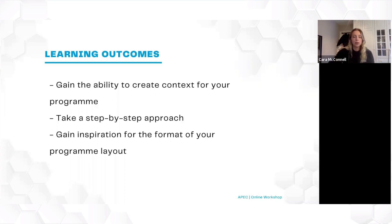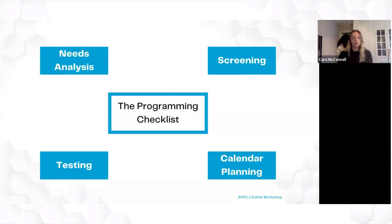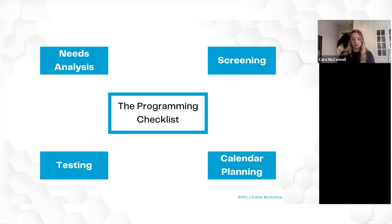The different components of the checklist — the step-by-step approach — are our needs analysis, our screening and testing, and our calendar planning. Throughout this whole webinar the key thing to keep in mind is the importance of creating context for the program. It might not be the most glamorous aspect of strength and conditioning, but it definitely is one of the most important aspects. Everything I'm talking about today goes back to creating context.